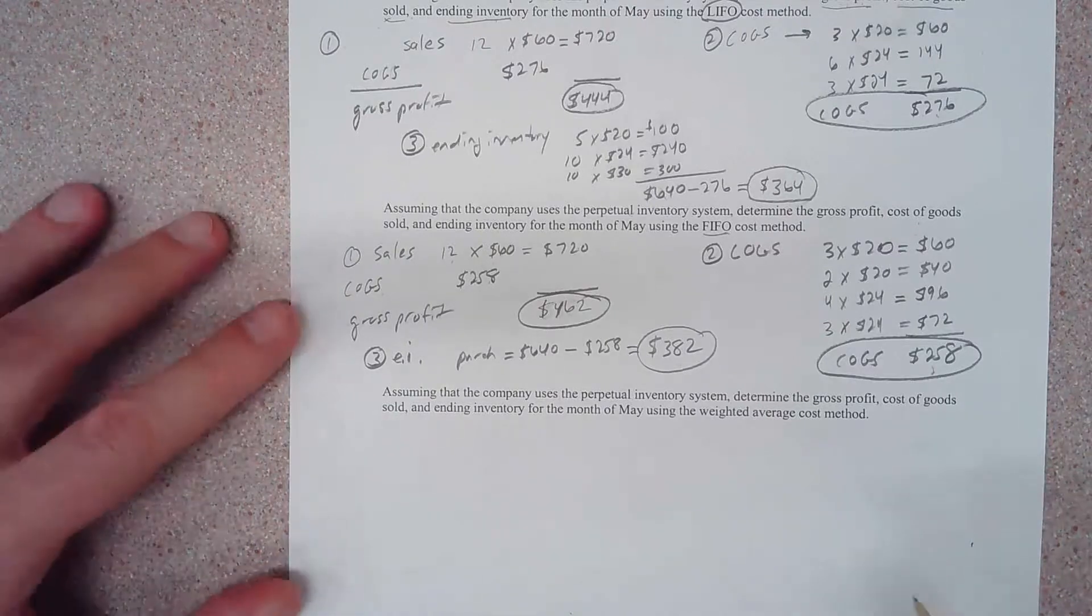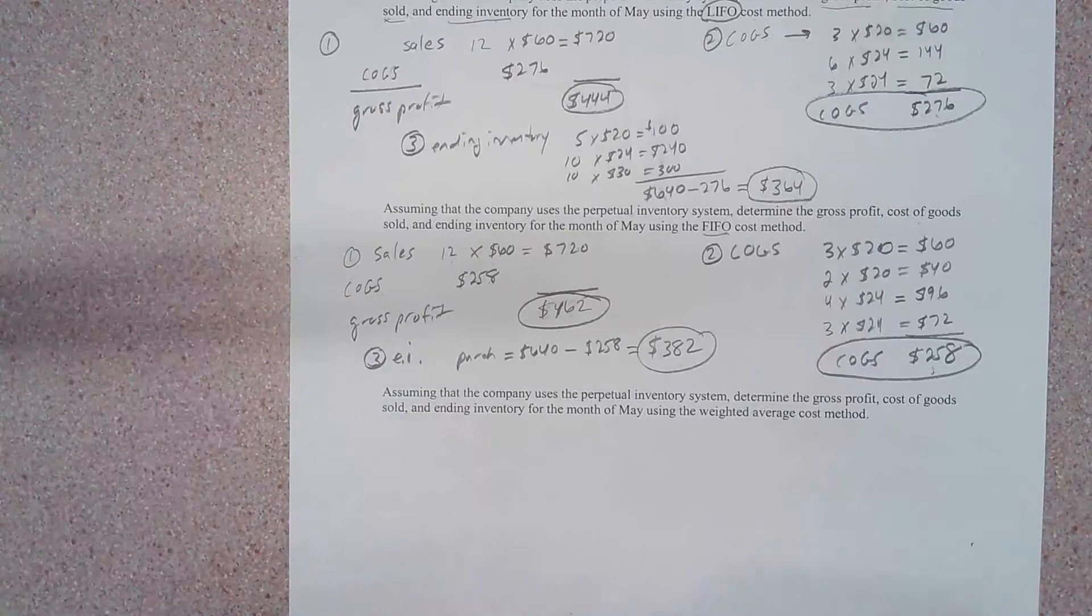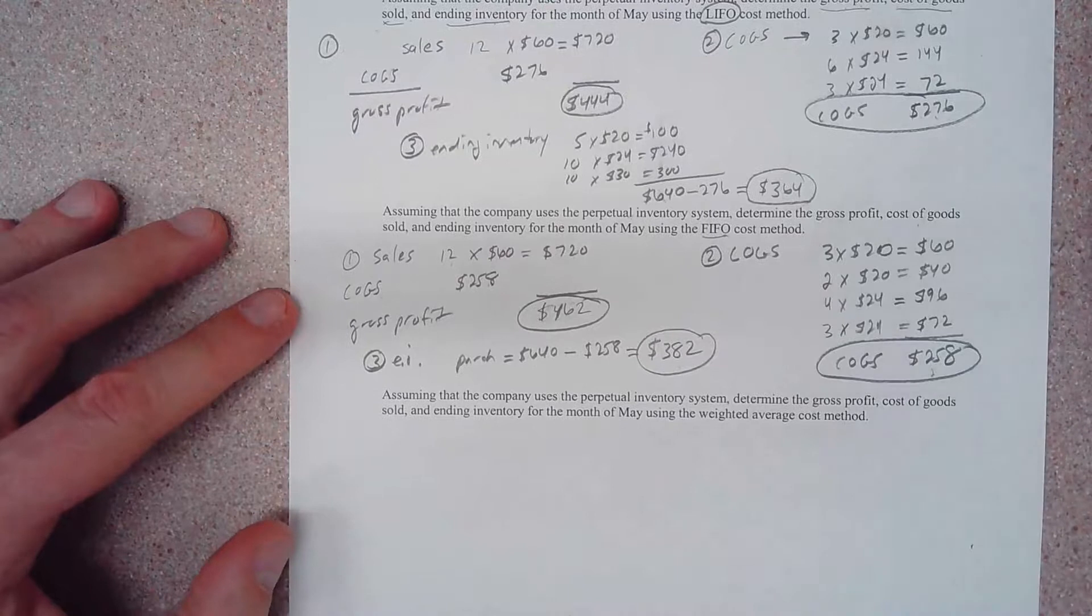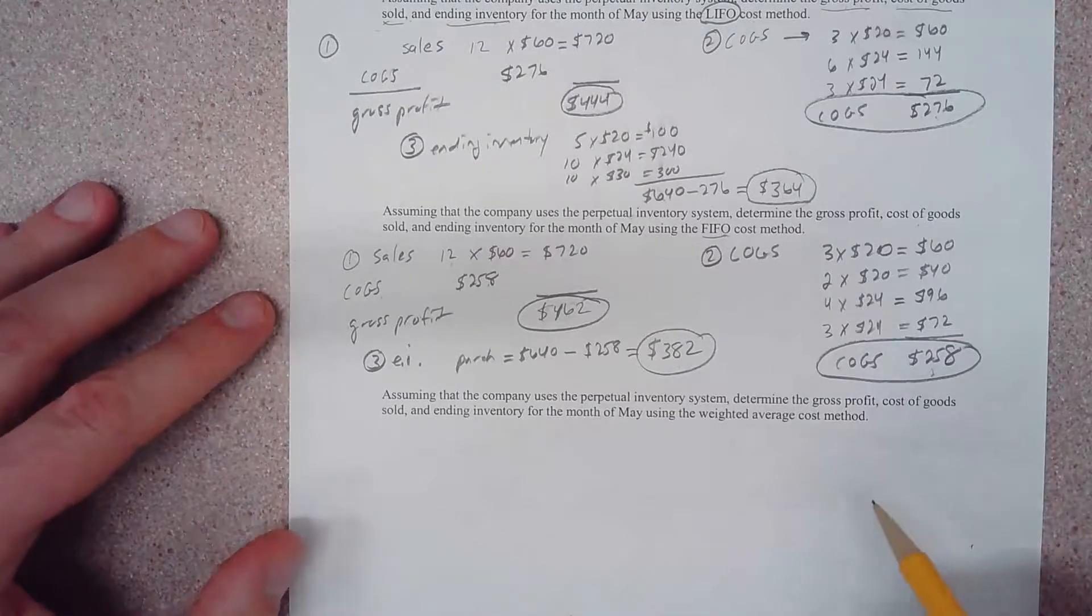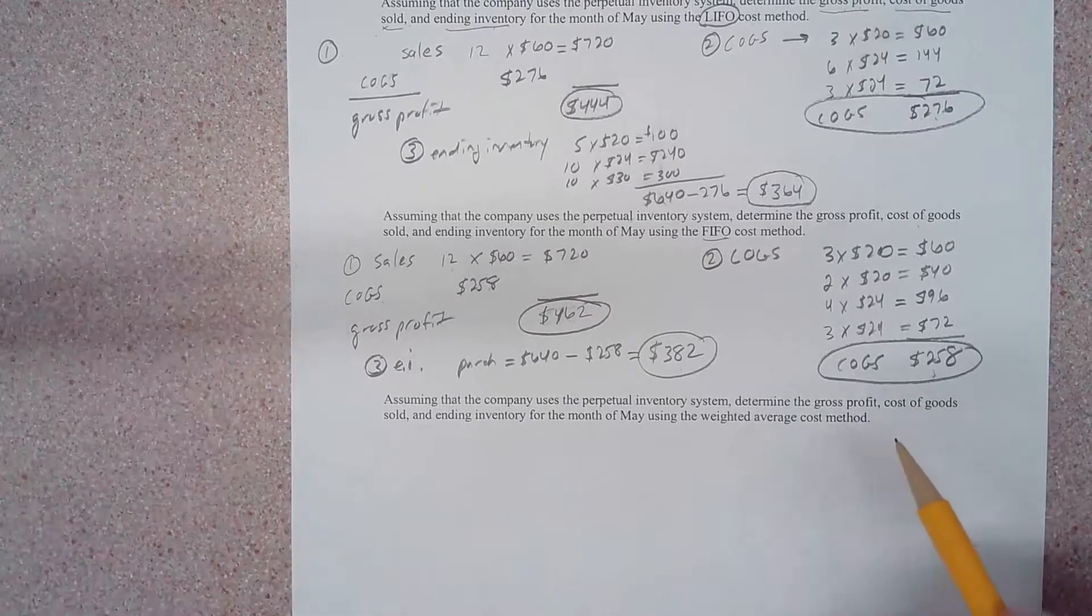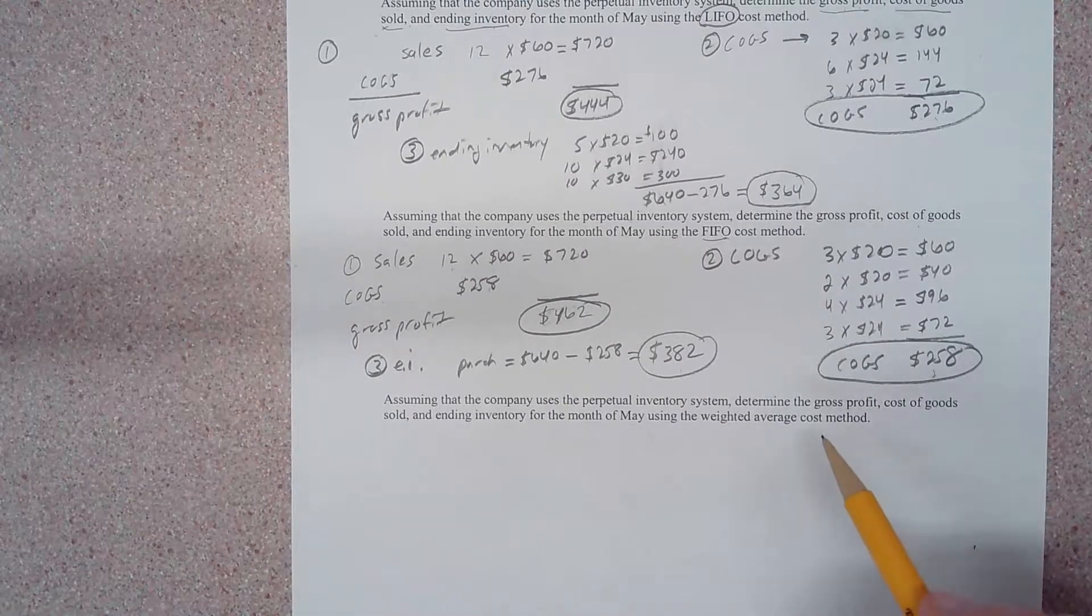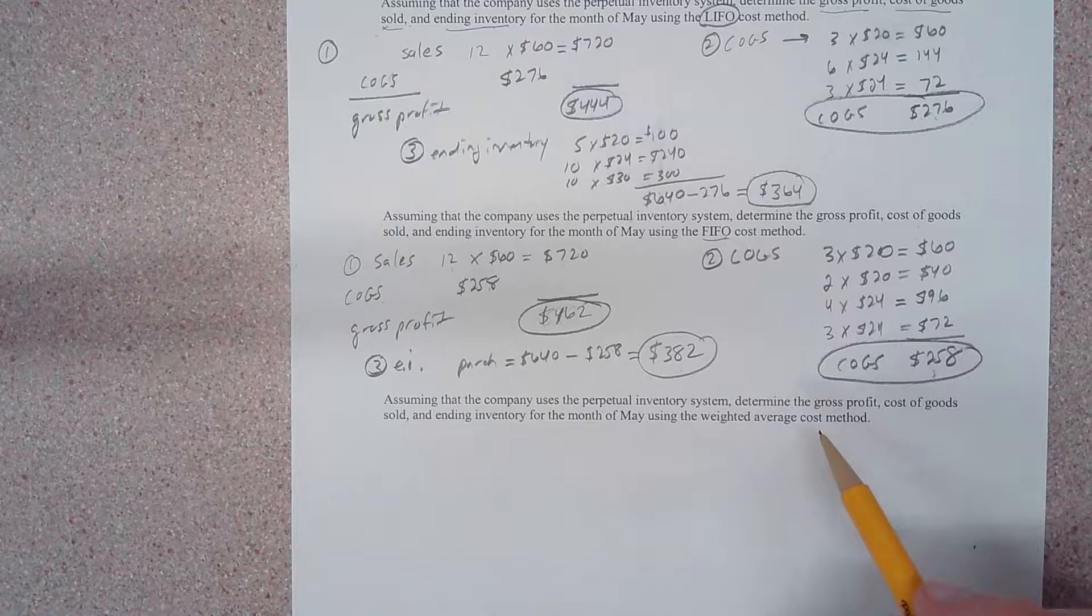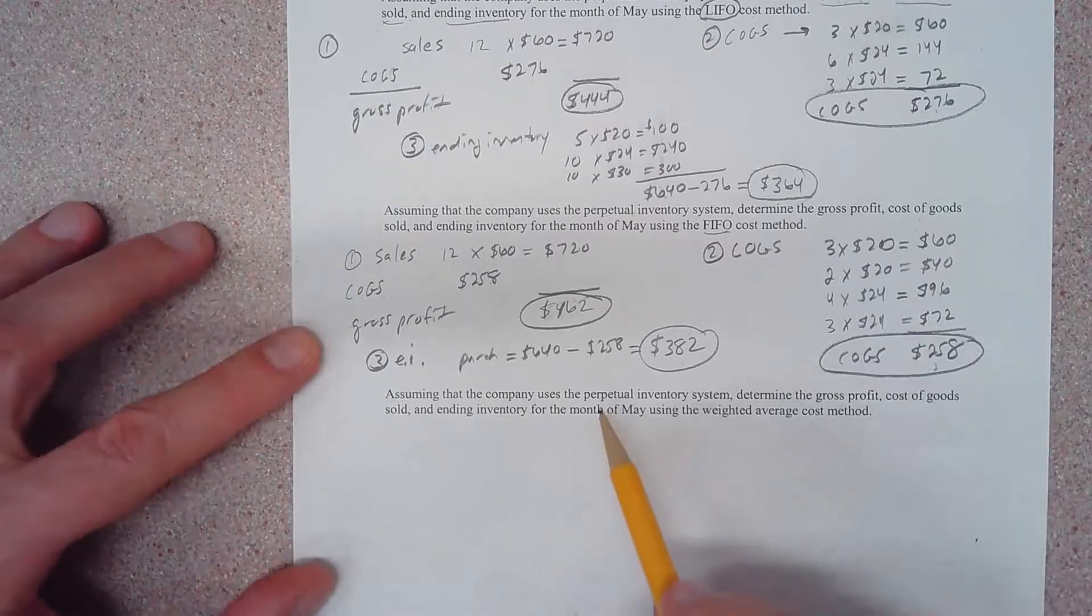Alright, let's look at the weighted average cost method. Now we need to be very careful here because I have noticed that there are a lot of videos on YouTube that talk about the weighted average cost method, and many of them provide information from the perspective of a periodic inventory system. Our question asks for a perpetual inventory system.